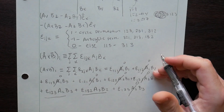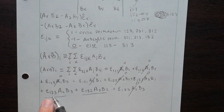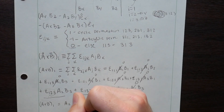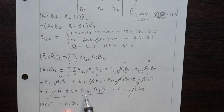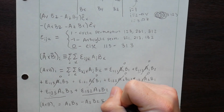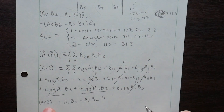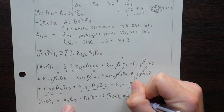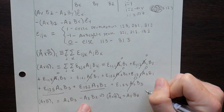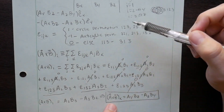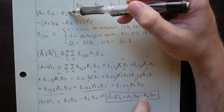Epsilon_123 is a cyclic permutation, so that symbol is 1. Epsilon_132 is anticyclic, so that's minus 1. That tells us (A cross B)_1 = A_2·B_3 minus A_3·B_2. Going back to the older convention with y's and z's, the x component of A cross B equals A_y·B_z minus A_z·B_y. And if we look up at what we calculated before, we got A_y·B_z minus A_z·B_y. Perfect — it works.